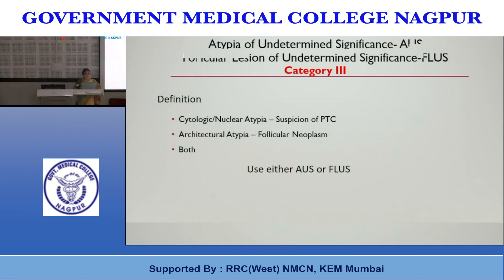Because the majority of atypia is related to follicular lesion, using 'follicular lesion of undetermined significance' is acceptable. However, what is discouraged is using the OSTLUS category for cytologic atypia and the FLUS category for architectural atypia. Do not use these terms for subclassification within this category.